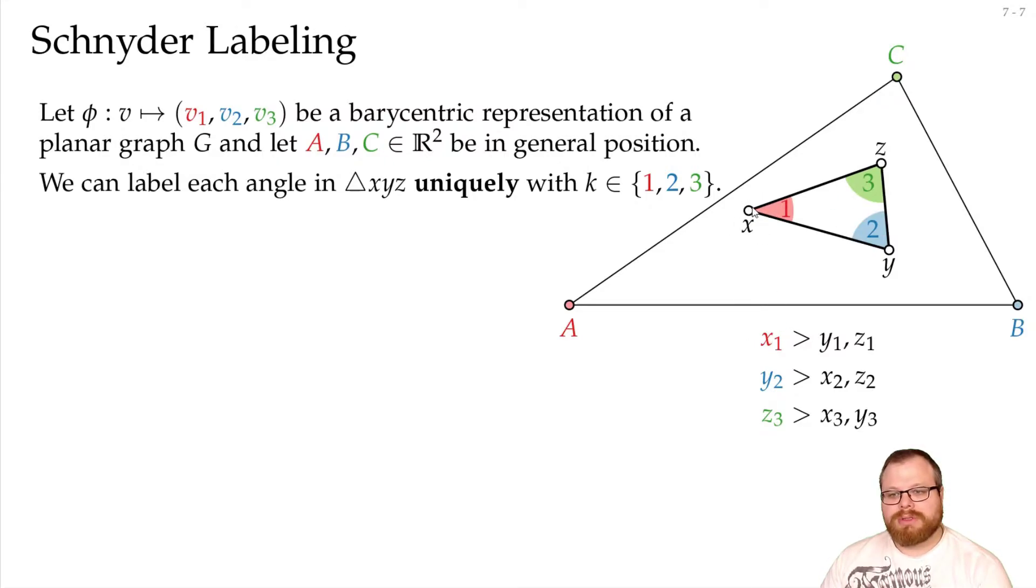So, x has the larger 1 value, so the angle here is a 1. y has the larger 2 value, so this angle here is a 2. And z has the largest 3 value, so the angle here is a 3. This uniquely defines us a labeling of all the angles in our barycentric representation.